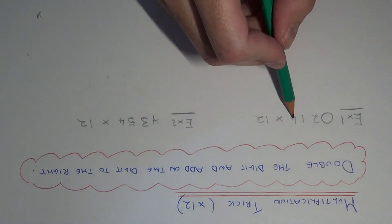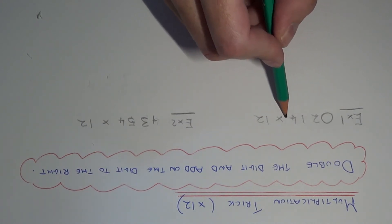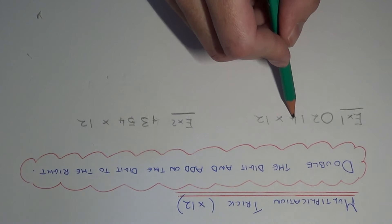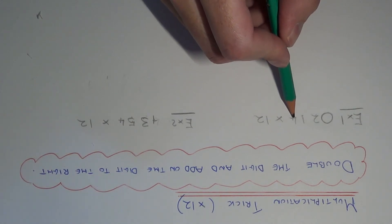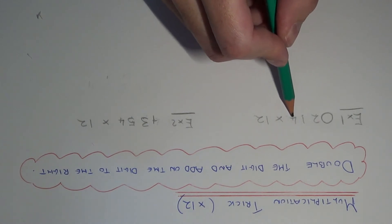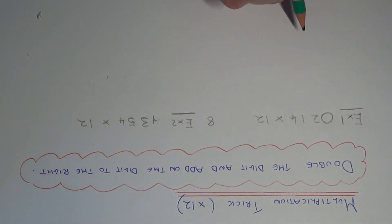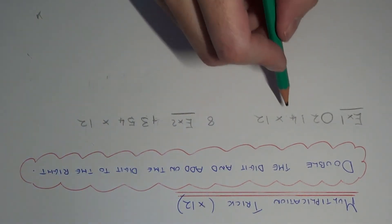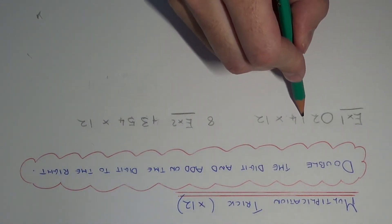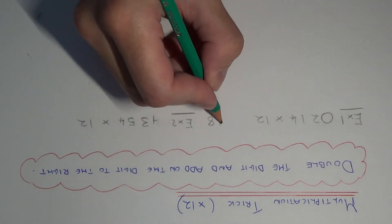Starting at the end, we need to double this number and add on the digit to the right. We double 4 which is 8, and there's no digit to the right of the 4, so the first part of our answer is 8 — that's the final digit. Moving to the next digit, which is 1: double the 1 is 2, add on the digit to the right which is 4, so 2 add 4 is 6 — we put the 6 here.